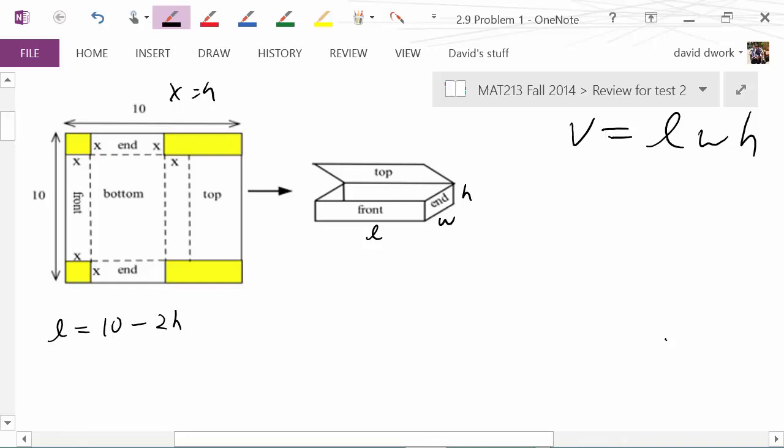Now going along the other side, the width, we know that part's the width. So width is equal to 10 minus again, you can see here you have another x, so it's going to be minus two x's or two h's. But then we also have to take care of this distance going from here to there.